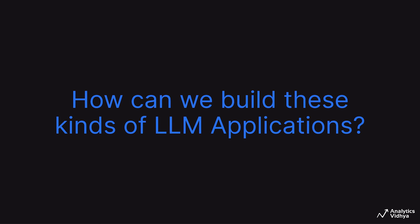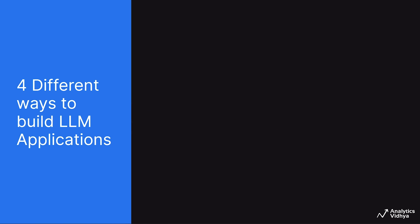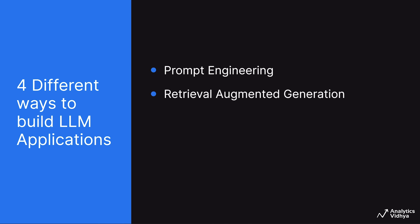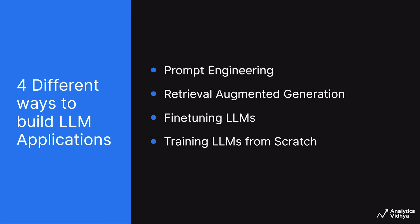So the question is, how can we build these kinds of LLM applications? And that is what we'll discuss in this particular course. Primarily, there are four different methods to build LLM applications: the first one is called prompt engineering, the second one is retrieval augmented generation, popularly known as RAG, the third one is fine-tuning LLMs, and the fourth one is training LLMs from scratch.